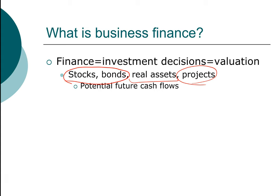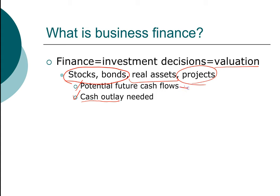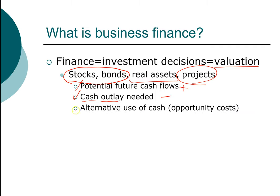The way we compute value is based on the potential future cash flows of these projects. Computing valuation boils down to three very important parts: first, what kind of cash flow can a particular project generate; second, how much money we have to put out today — the cash outlay for the project; and third, what else can we do with that money? If we don't invest in a particular project or buy one stock, we're giving up the opportunity to invest elsewhere. In economics and finance, that alternative use is called opportunity cost.